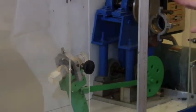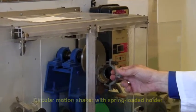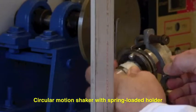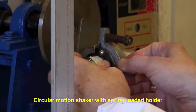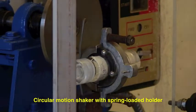The circular motion one is a little easier. You just pull the bracket out, place the cell in place, and then the springs will hold it.